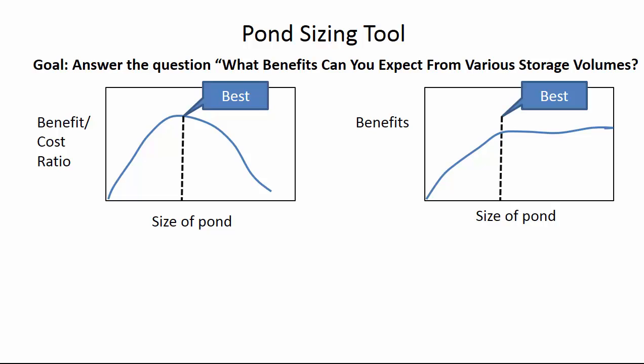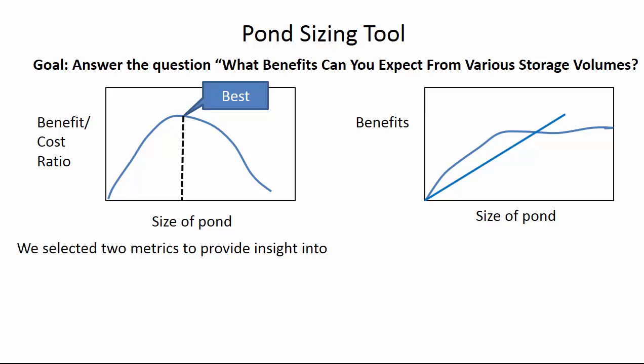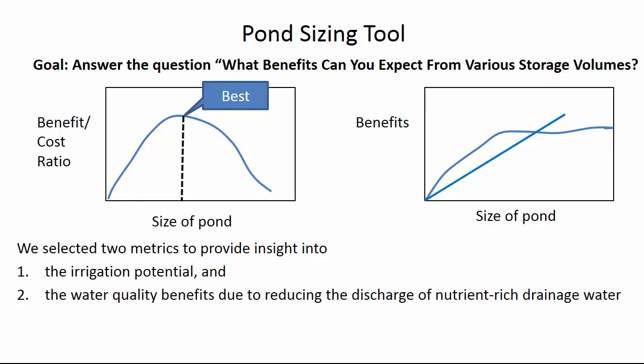If there's some kind of inflection there still might be a best size, but we don't know what this shape is like. So what we did was select two metrics that will start to provide insight into the irrigation potential and the water quality benefits for a range of pond sizes. That's what I'll explain.